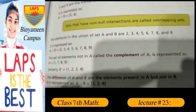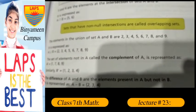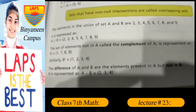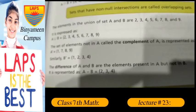The set of elements not in A is called the complement of A. It is represented as A complement is equal to 1, 7, 8, 9, and similarly B complement: 1, 2, 3, 4.